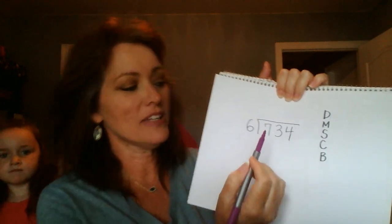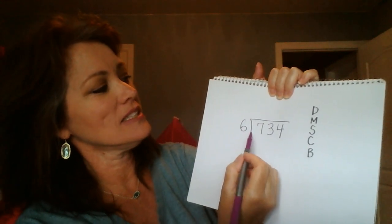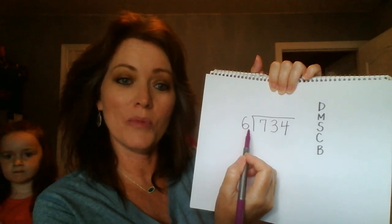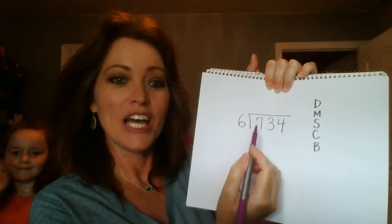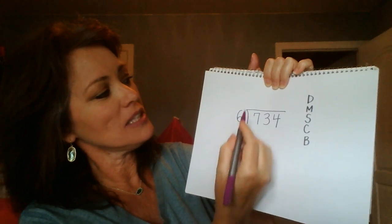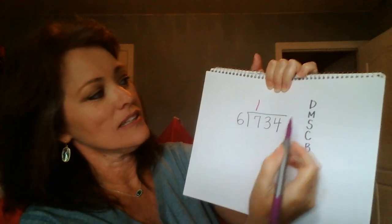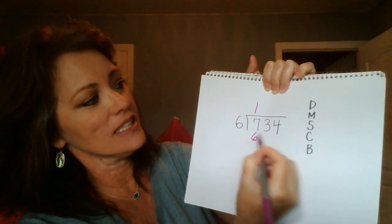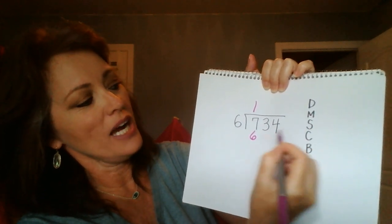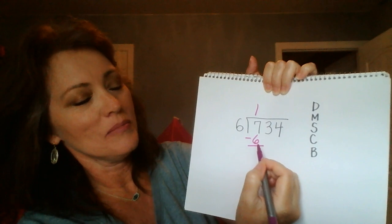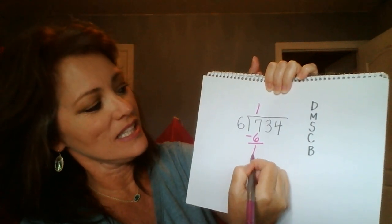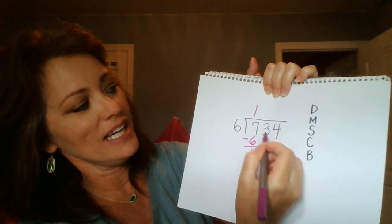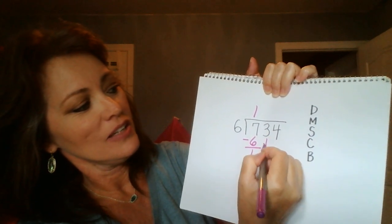Divide: 7 divided by 6. We are always going to be thinking about our multiples of 6. 7 divided by 6 is 1 — that's divide. Multiply: 1 times 6 is 6. Subtract: 7 minus 6 is 1. Check: 1 is less than 6. Bring down your 3.